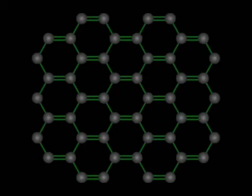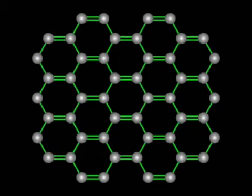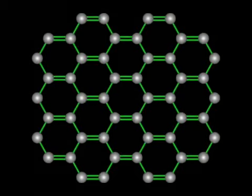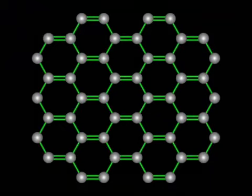Graphite is quite different from diamond and Lonsdaleite. In the graphite structure, each carbon is connected to only three atoms. In graphite, the carbon atoms must always form four bonds, so one of the three bonds must be a double bond. This gives an average bond order of 1.33.